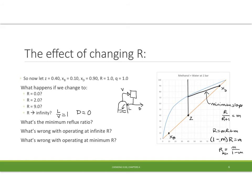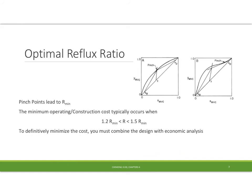So what's wrong with operating at the minimum reflux ratio? Well, let's just try drawing in steps here — across and down, across and down, across and down. Besides the fact that I'm getting a lot of steps, at some point I come in here and I pinch, and I get infinitely many steps as I come in to that pinch point. This is called a pinch point, and the number of steps as I approach that pinch point is going to be infinity. That will give me the smallest diameter tower but it'll give me infinitely many stages. Clearly we'd like something somewhere in between. So looking for a pinch point is going to lead to our minimum.